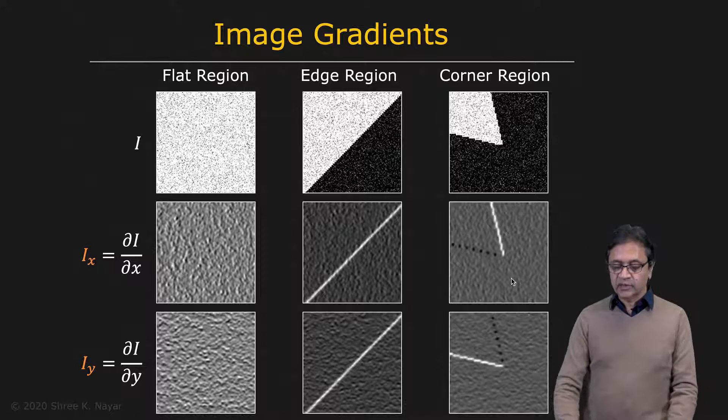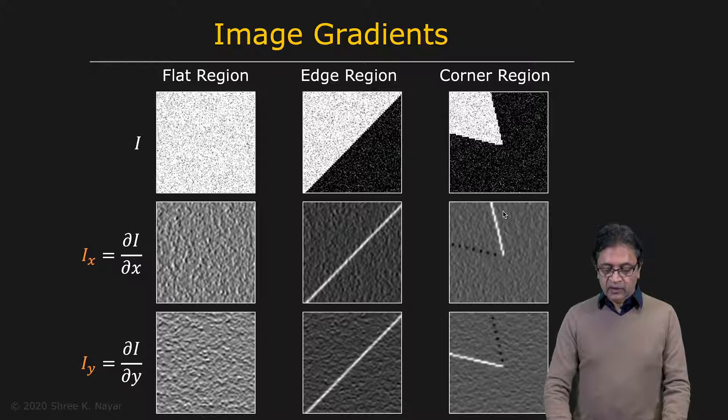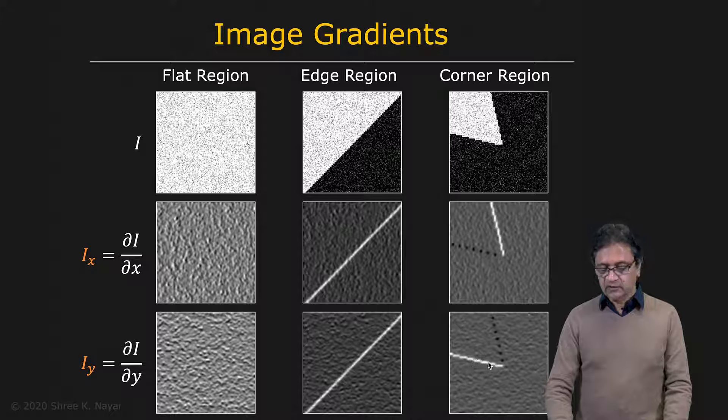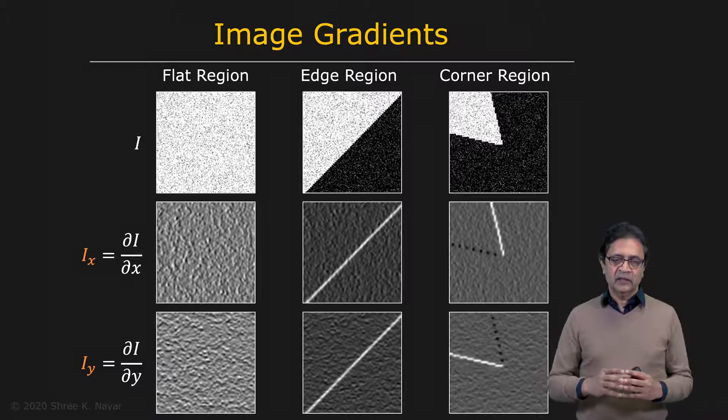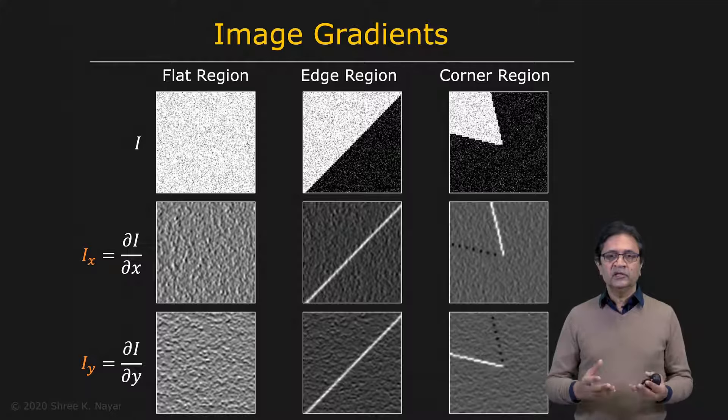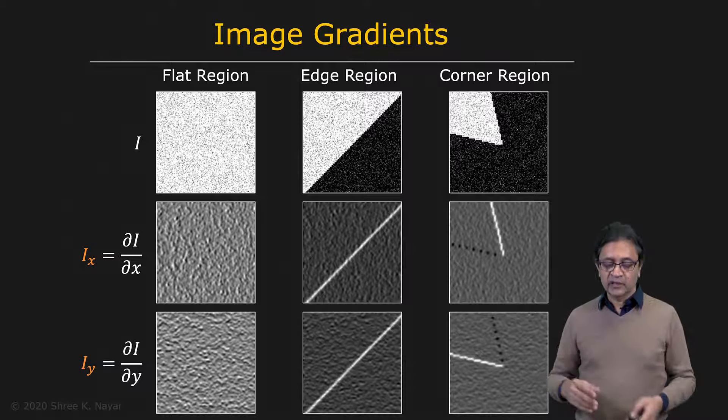In the case of the corner, you get low values pretty much everywhere, except you get a strong positive value along one edge for Ix, a strong negative value along another edge, a strong negative value along one edge for Iy, and a strong positive value along another edge. So we're going to classify these three regions as flat, edge, or corner based on the distribution of gradients within these regions.